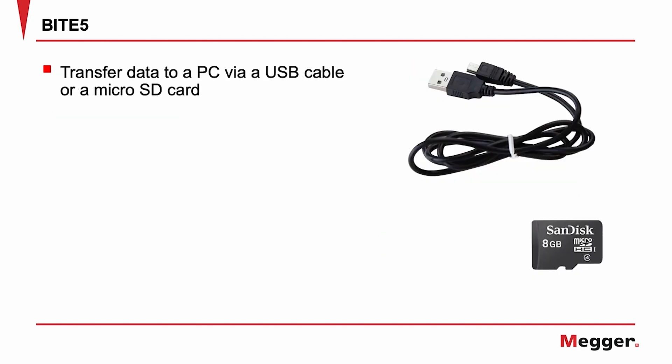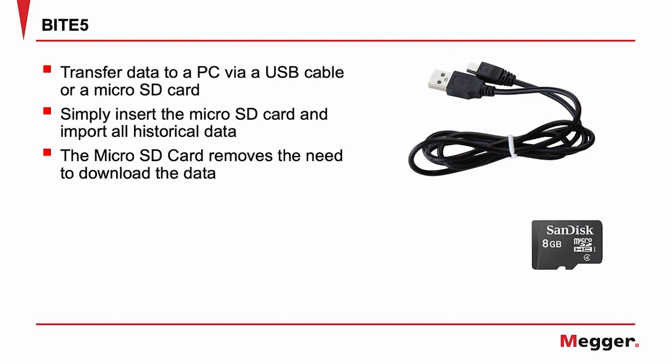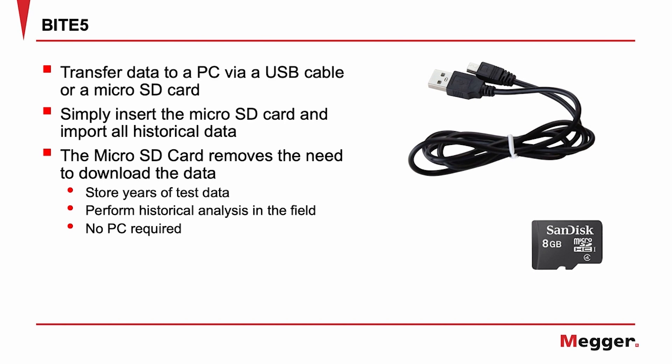If you wish to transfer the data to a PC, this can be done via USB cable or the microSD card. Simply insert the microSD card and import all the recorded historical data for the string. The removable microSD card removes the need to download the data, and allows you to store years of test data for historical analysis in the field. No PC is really required.